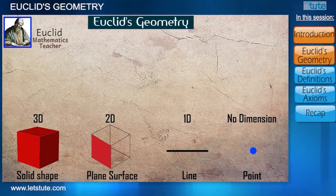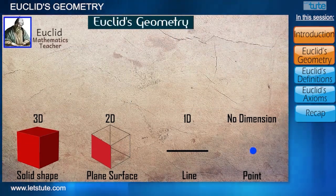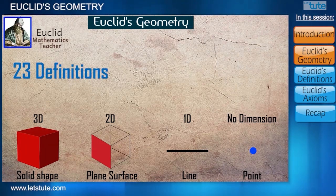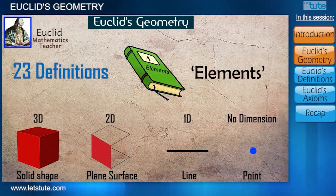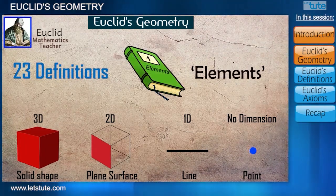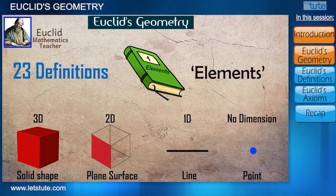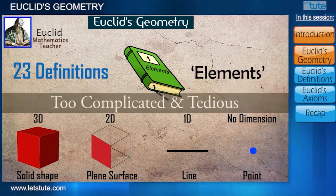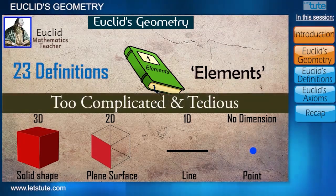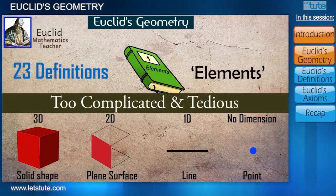Euclid started his comprehensive description of his thoughts with 23 definitions in Book 1 of Elements. We will not go through each and every definition because they are too complicated and tedious, but we will look at a few of them to understand his thoughts.